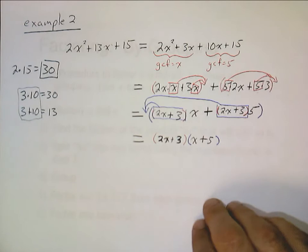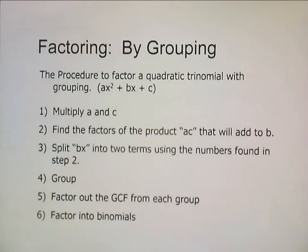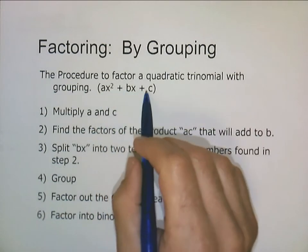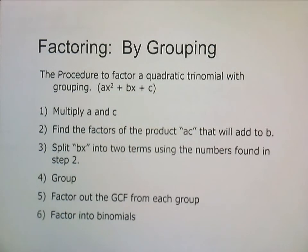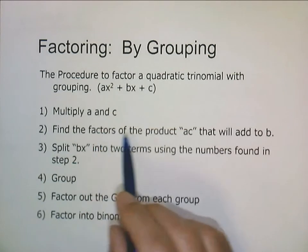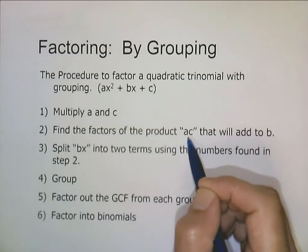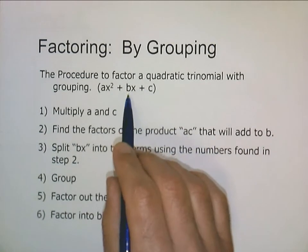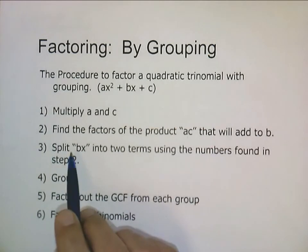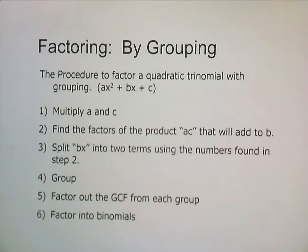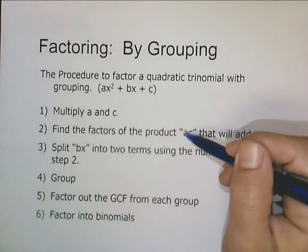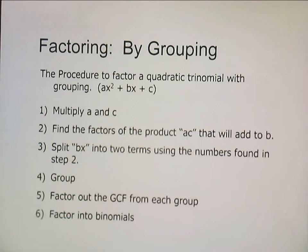So that's how we factor by grouping, and here is the general procedure. We've got a quadratic trinomial that looks like a times x squared plus bx plus c. First, we multiply a and c together. Then we find factors of the product ac that will add up to b — two numbers that multiply together to give us ac but add together to give us the coefficient b of the linear term. Split up the bx into two terms using those numbers, then group the first two terms together and the last two terms together, and factor out the GCF.